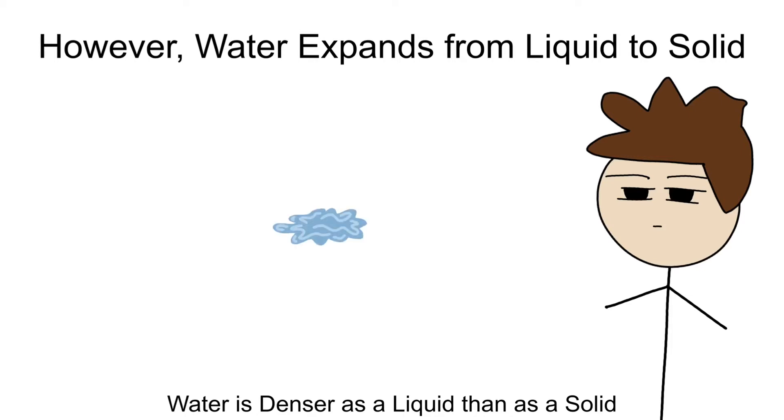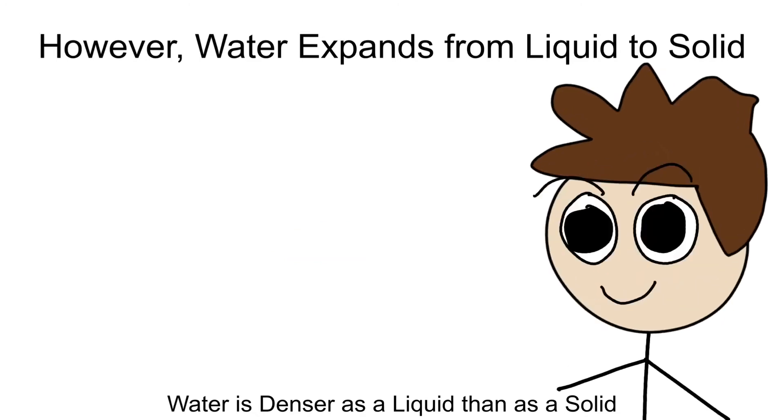Water expands as it starts from liquid to ice and it compacts itself together as it goes from ice to liquid. Kind of weird, huh? So why does this happen? The answer is found on a molecular scale, specifically focused on hydrogen bonds.